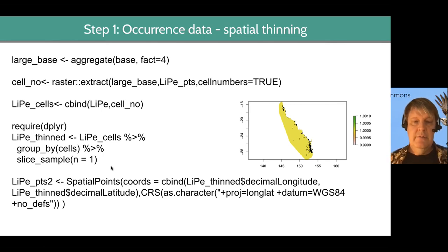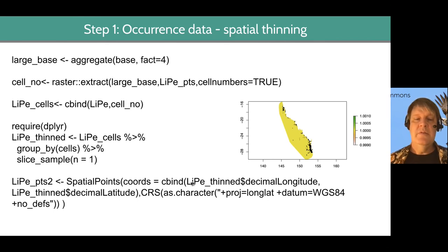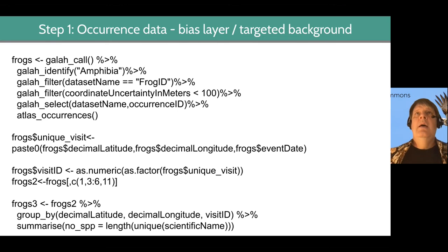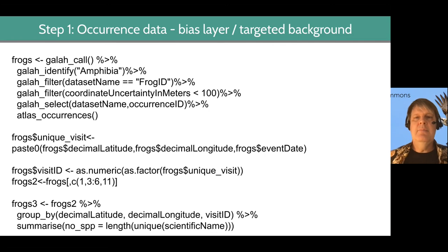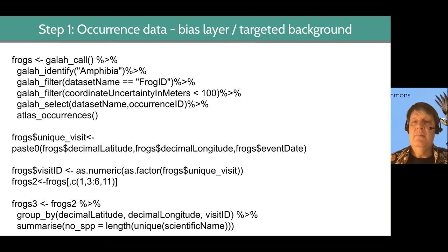Then we take these thinned data and turn them into a spatial points layer — those latitudes and longitudes become a spatial points layer. You could use those data as your presence data — it's a spatially thinned presence dataset. The next step is to play with the idea of creating bias layers and targeted background points, which are two separate things that do similar things.